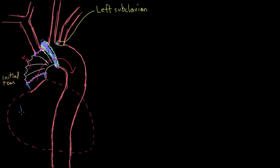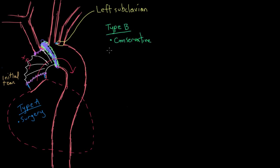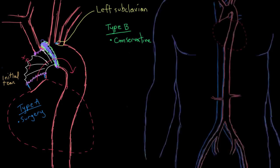People who have type B dissections are normally treated with conservative therapy — they don't get more invasive therapies like open surgery, because the risks of surgery are greater than the risks of managing the dissection with medication. Having said that, there is a minimally invasive surgery that can be done for type B dissections, and I'll touch on that before discussing the medications typically used to manage them.